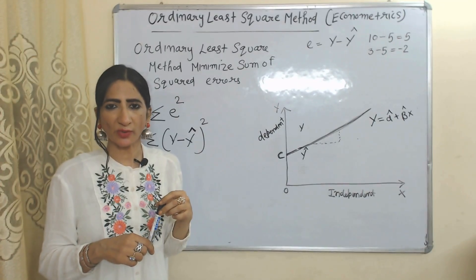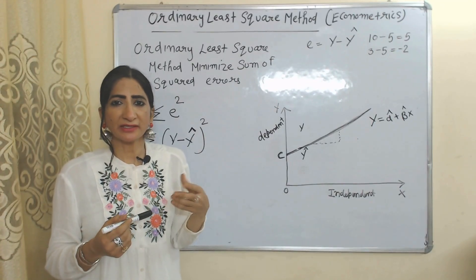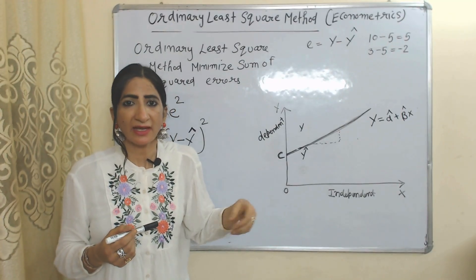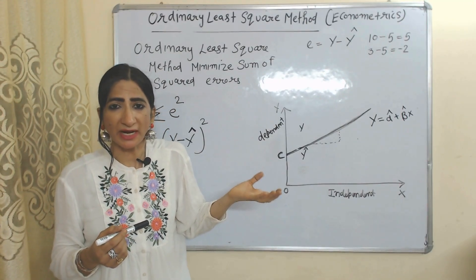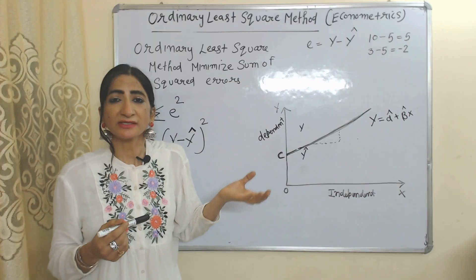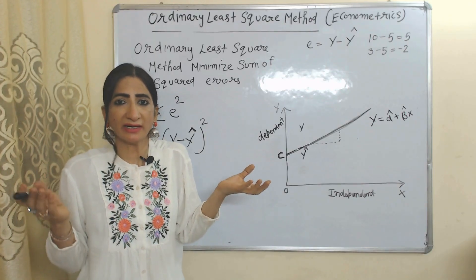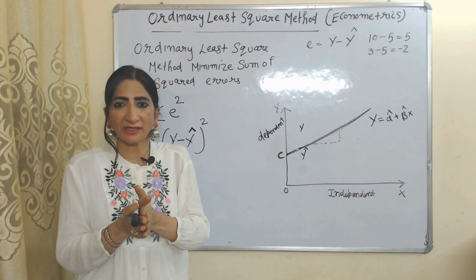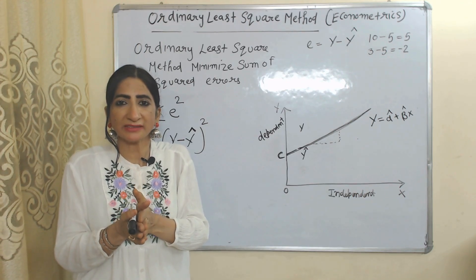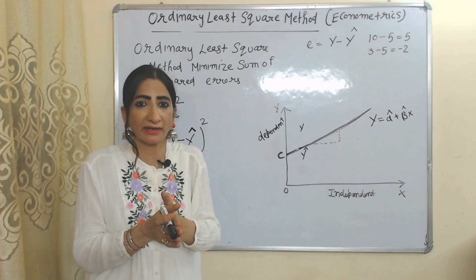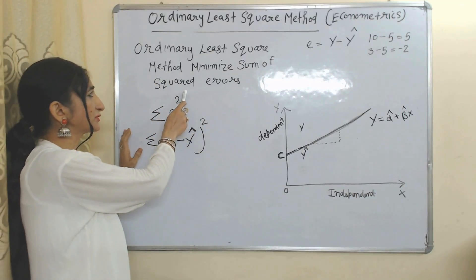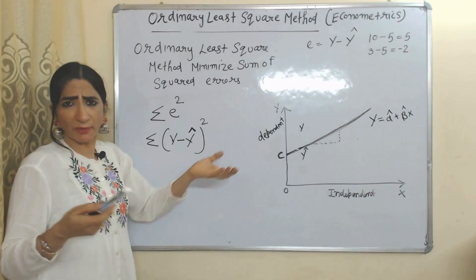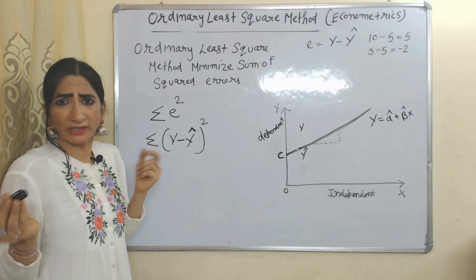Ordinary Least Squares does not directly minimize the error. Instead, it minimizes the sum of squared errors. What do we mean by sum of squared errors? Error can be positive or negative.